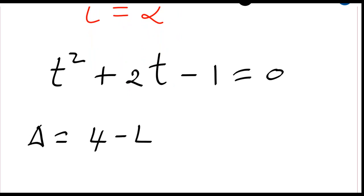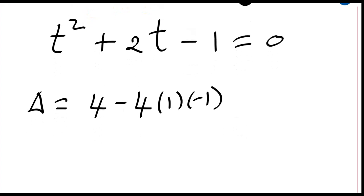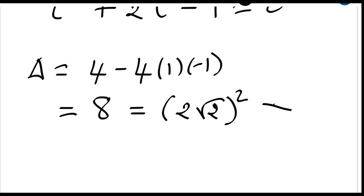Okay, and we see that this is equal to eight, which is two times the square root of two, squared. Since this delta is greater than zero, this means our equation has two solutions.